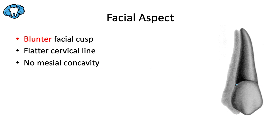Also, the cervical line is a bit flatter than we saw with the first premolar. There's also a smaller or absent mesial concavity, which is vastly different than the first premolar where we saw that big concavity right at the CEJ area. Here, that mesial surface is relatively flat with a flat outline.